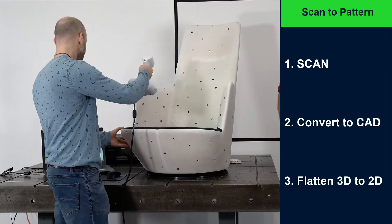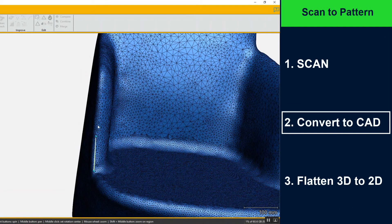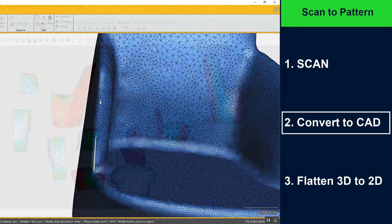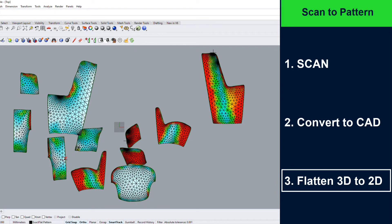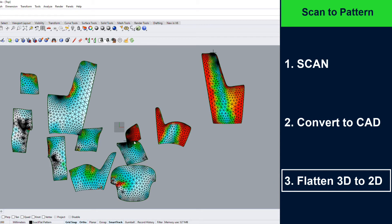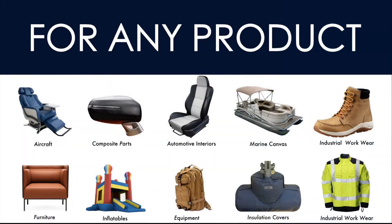There are three easy steps. Step one is to scan your part. Step two, convert your scan to 3D CAD. And step three is to flatten your CAD model from 3D to 2D and create your patterns. It works for any type of product. Let's take a closer look.